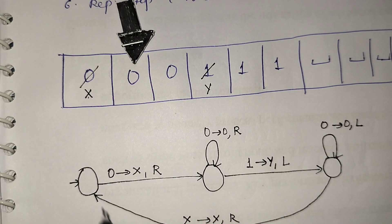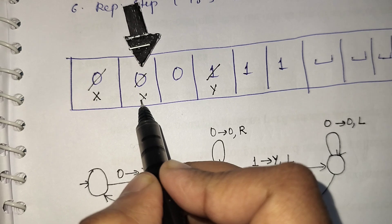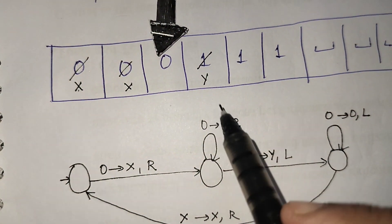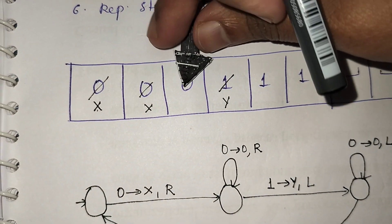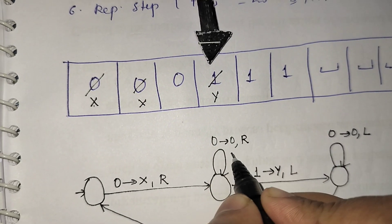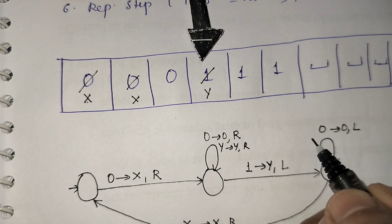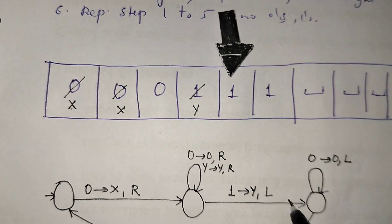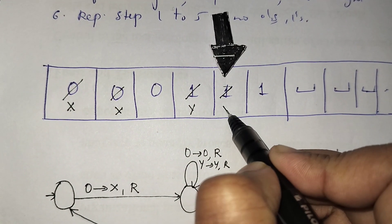Again this step repeats. Whenever I see a 0, I replace it with x, then keep moving towards right. While traveling right I can see 0 — keep as it is, move towards right. While moving towards right until we see a 1, I can also see a y. Whenever I see a y, keep as it is, move towards right. Whenever I see a 1, replace it with y. Then move towards left.